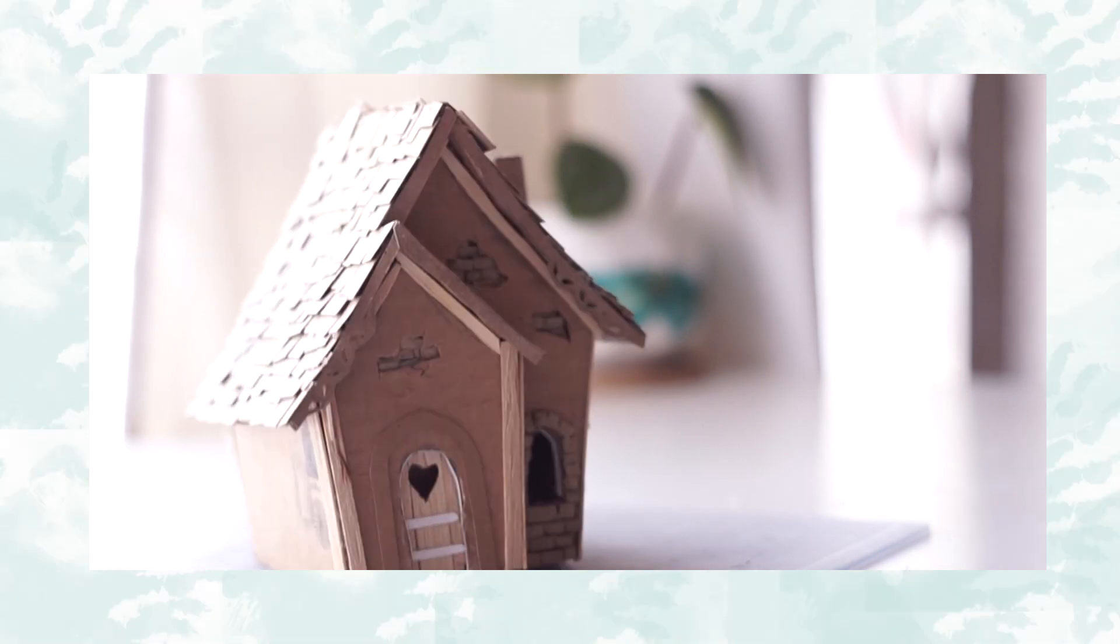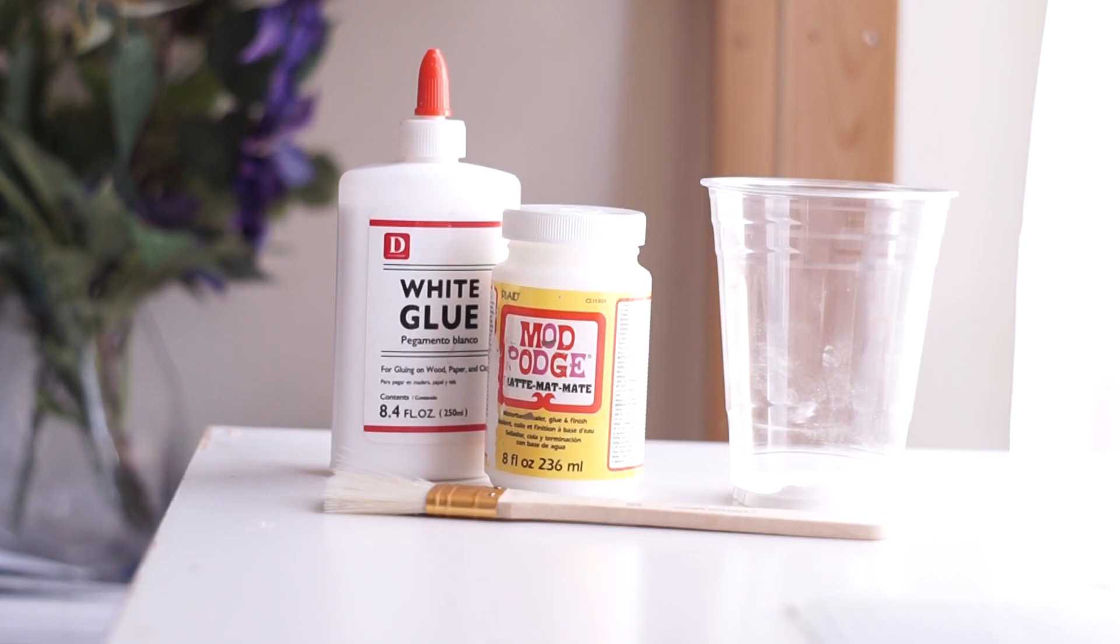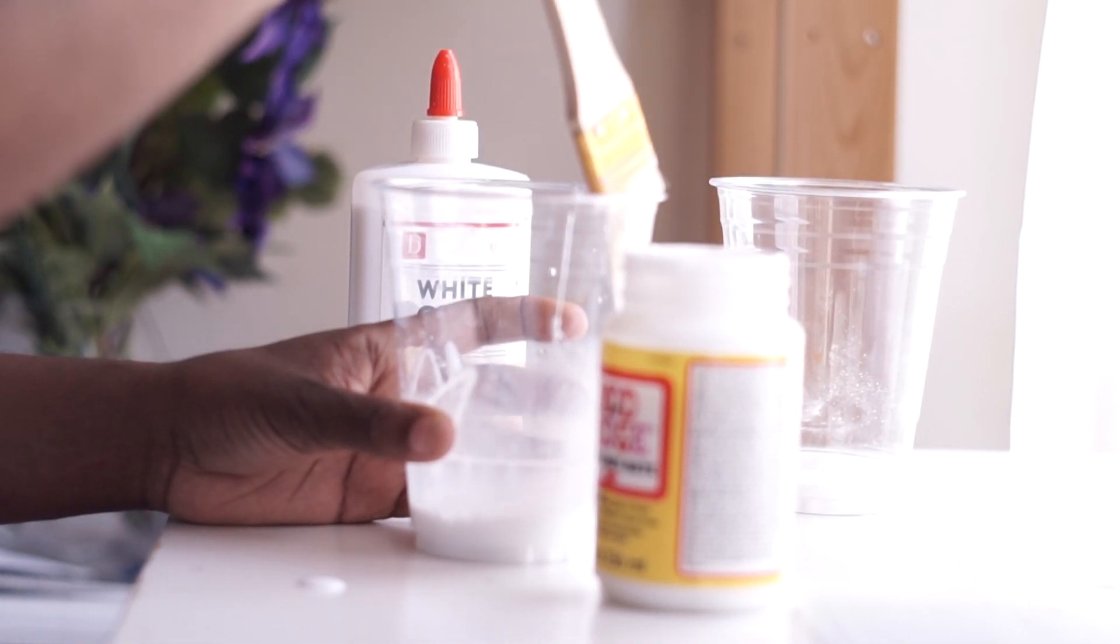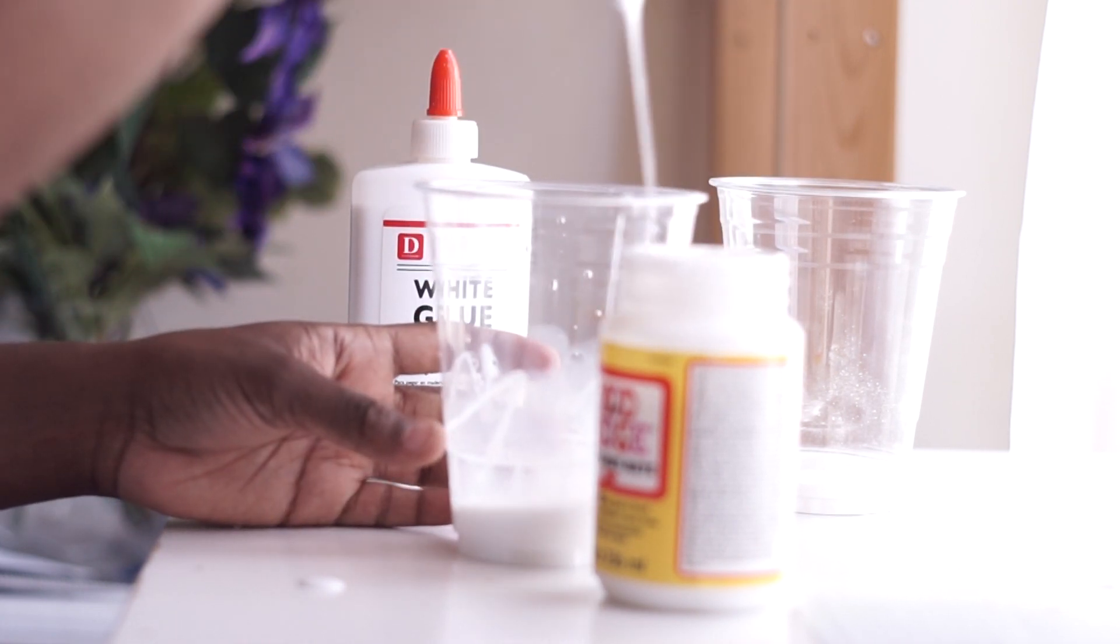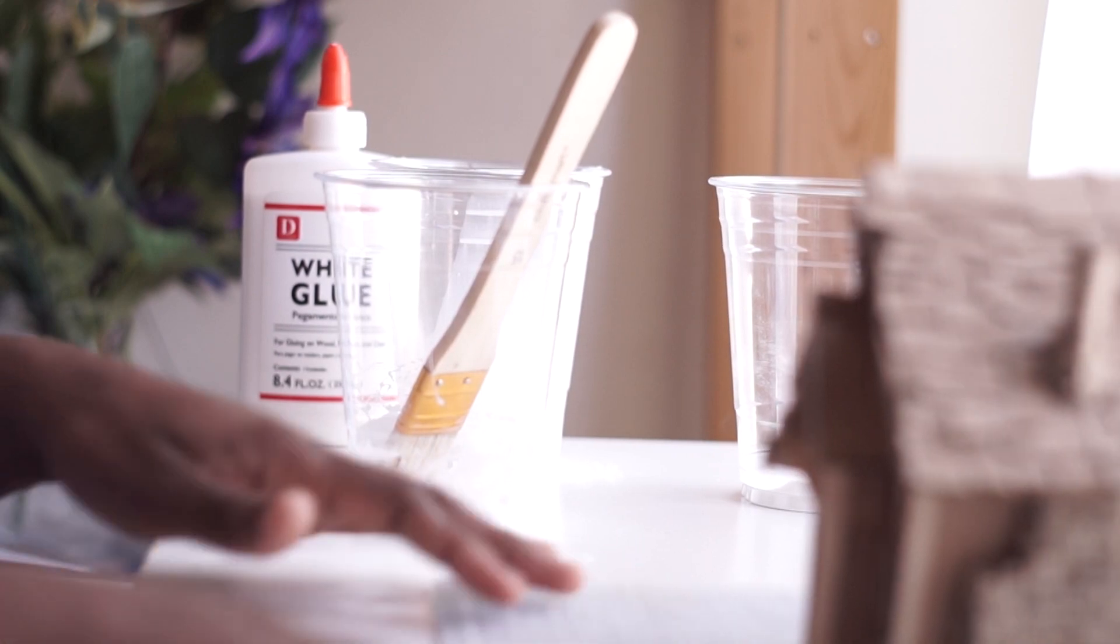And after doing this roof, I was super excited to start painting this project. I did have one concern, and I thought that because the acrylic paint was kind of watered down, that it might cause all of this cardboard to warp and start being all saggy.